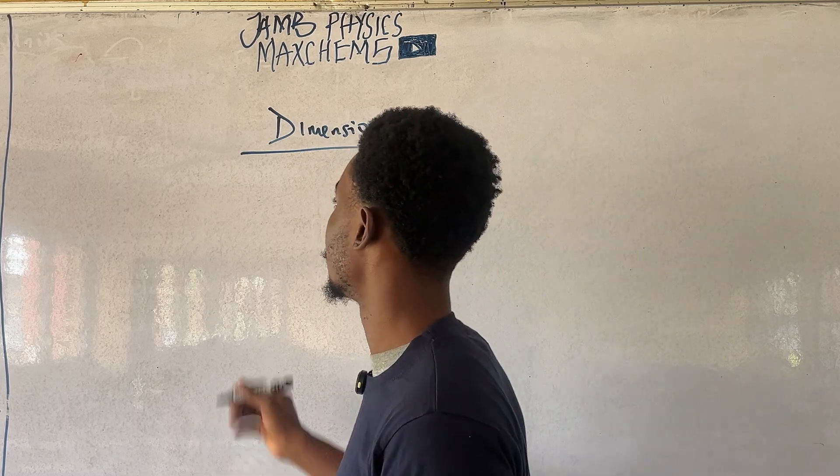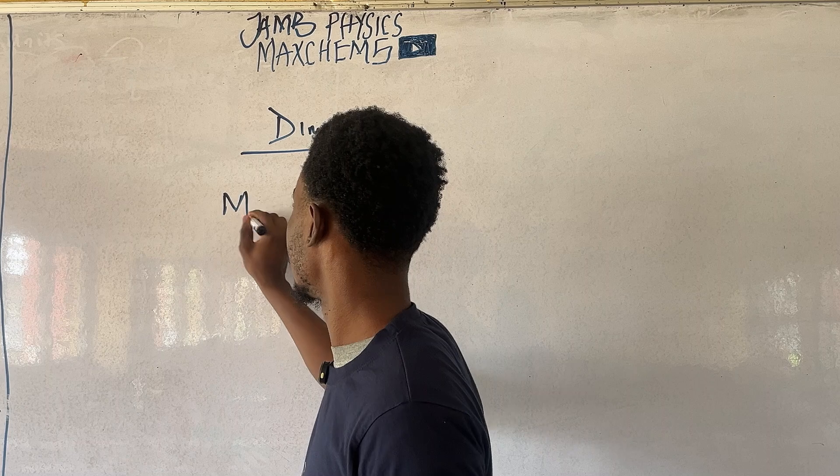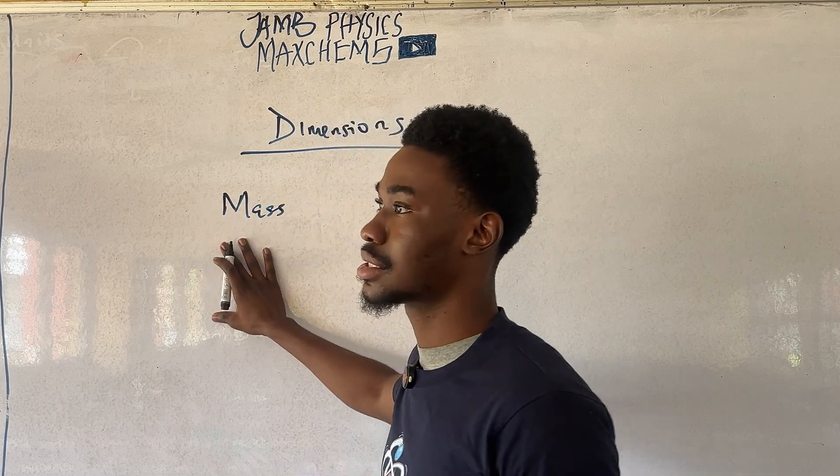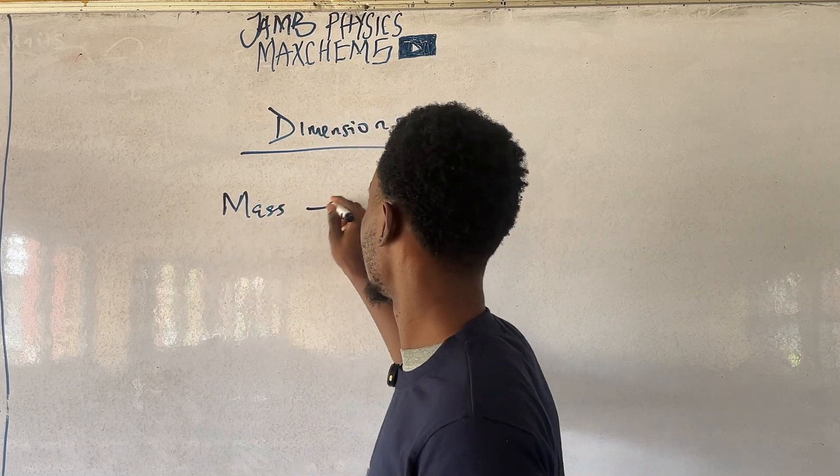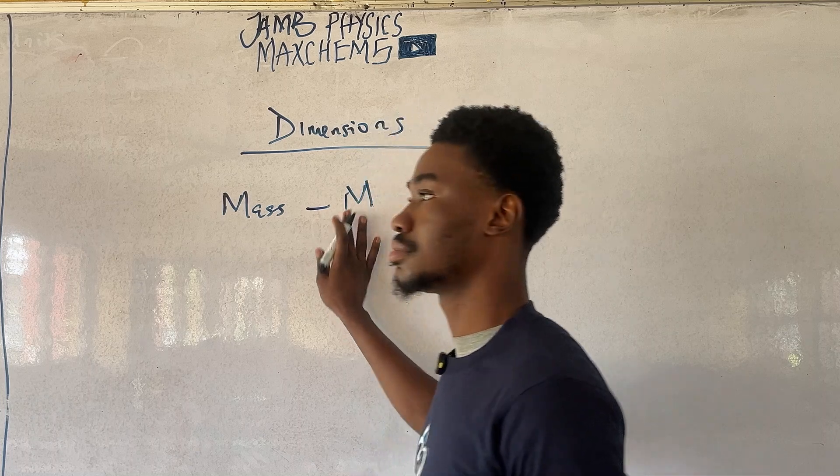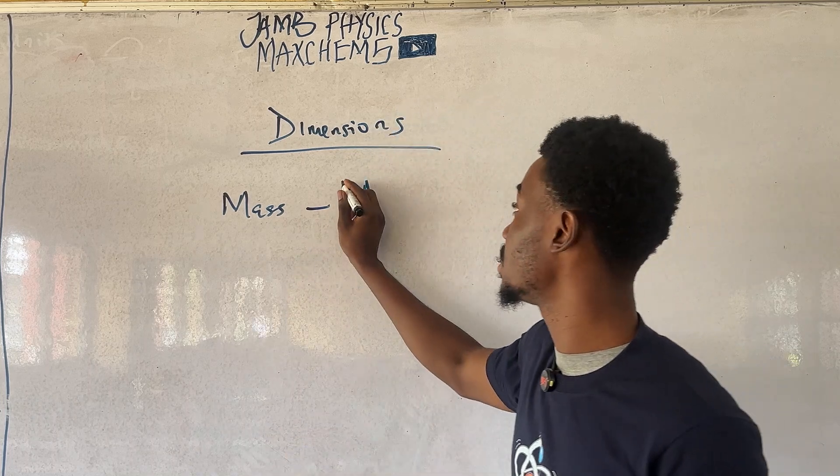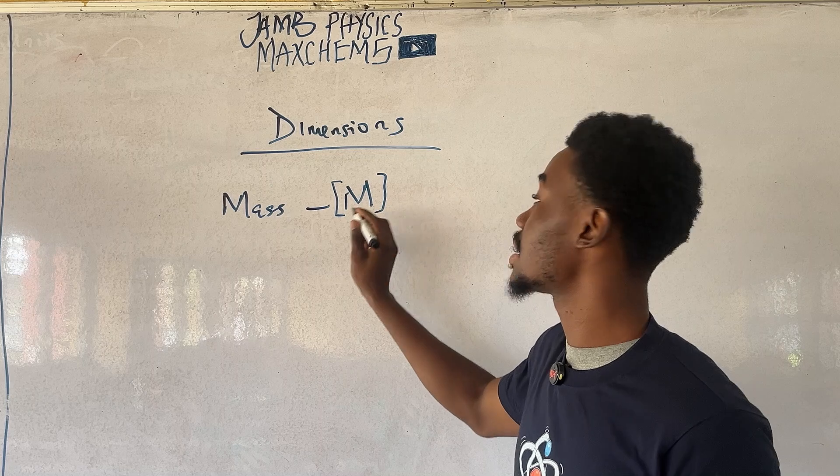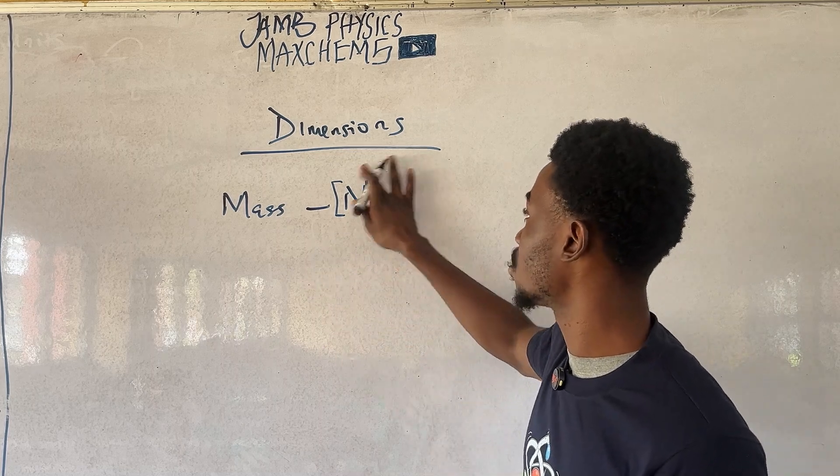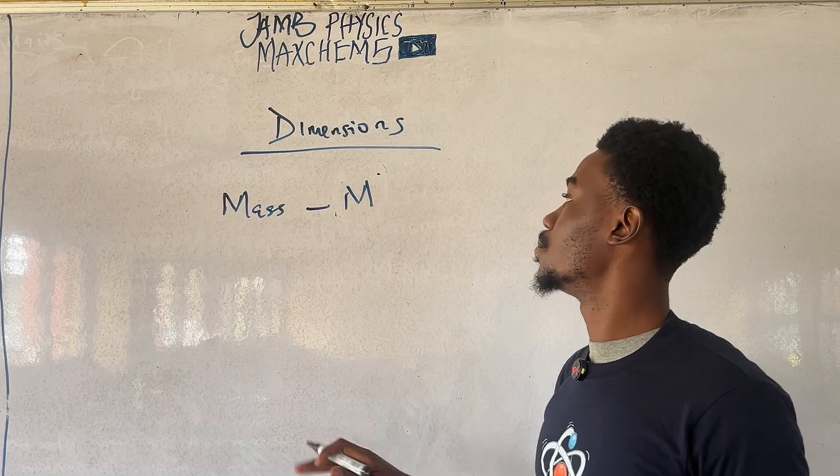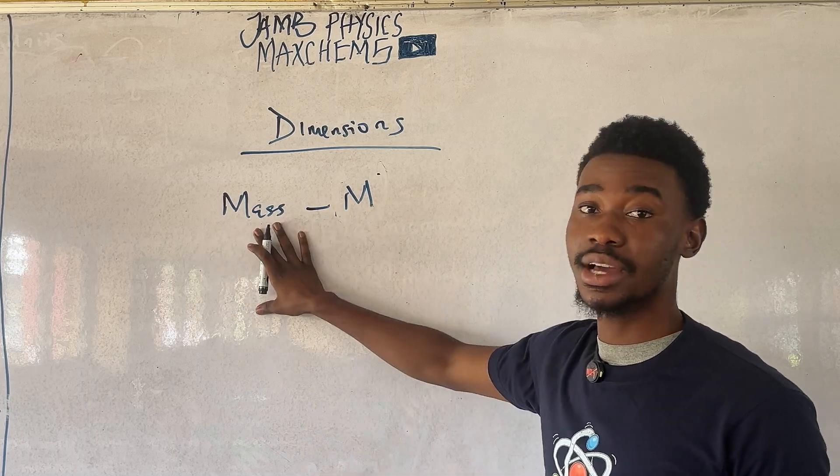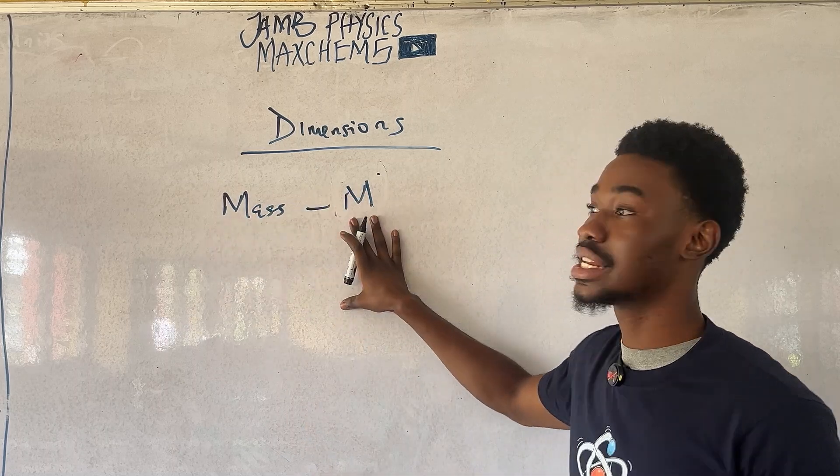Let me write a fundamental quantity. Mass. The dimension for mass is M. That's what we write. And in some textbooks, it's written with this type of brackets. But for the sake of simplicity, I would exclude that. So, the dimension for this fundamental quantity, mass, is written like this.